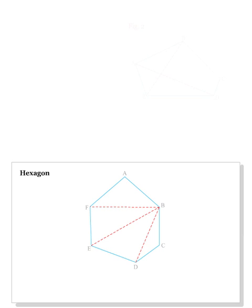Again, make sure the diagonals don't cut each other. Therefore, the angle sum of the hexagon is four times 180 degrees, which is 720 degrees.